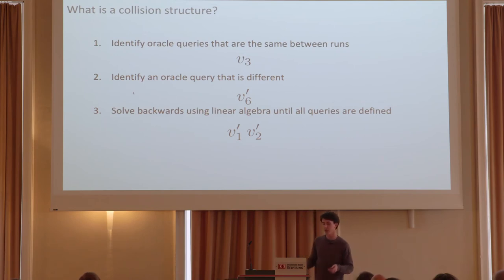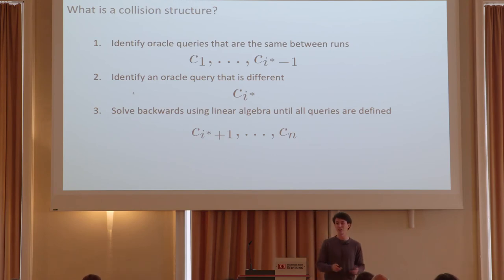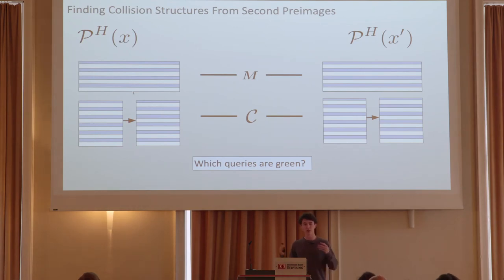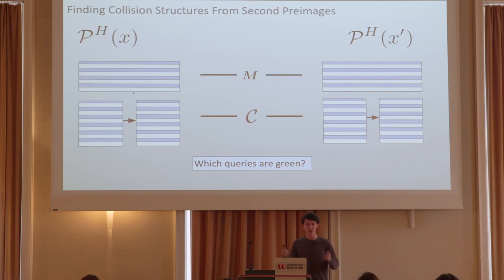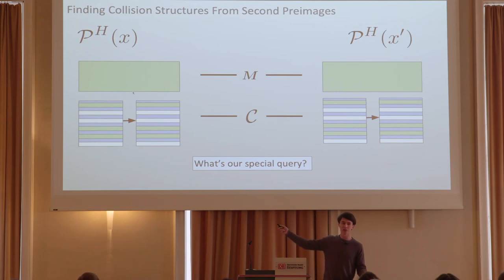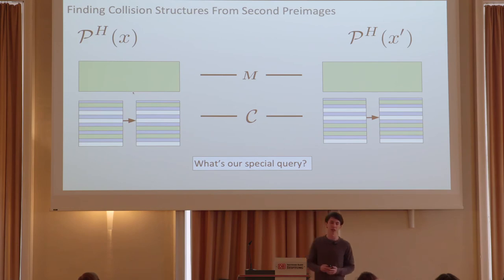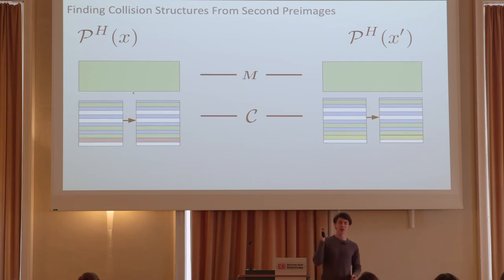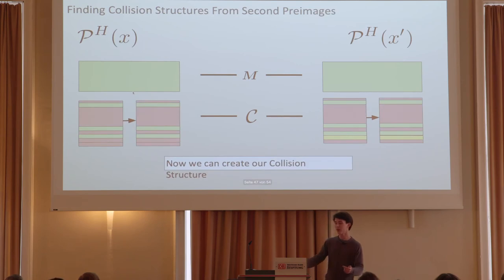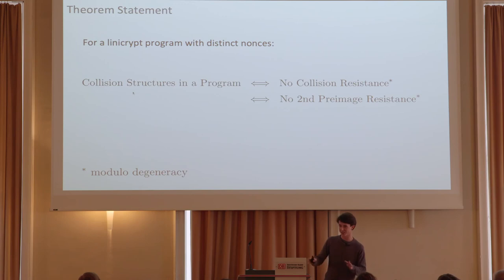Collision structures are the special sauce used to cook up collisions or second pre-images. Without loss of generality, the attacker makes all queries in both the original run and the second pre-image run in parallel. All outputs are the same between both runs — we mark those green, and work backwards to mark everything leading to those outputs as green. The first non-green query — the first non-same query the adversary makes in both runs — is our special query. We then use all this information to work backwards and find our collision structure.